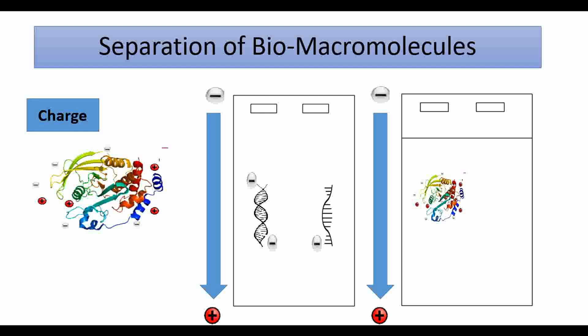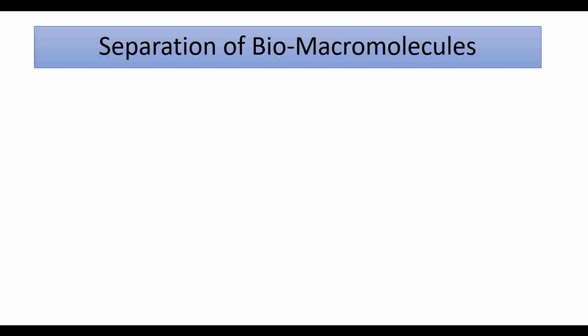To overcome this problem, we might use SDS detergent, which binds to the polypeptide chain, linearizes it, and gives it negative charge, which facilitates its migration through the gel. The other property is size. Larger macromolecules migrate slower than the smaller ones.